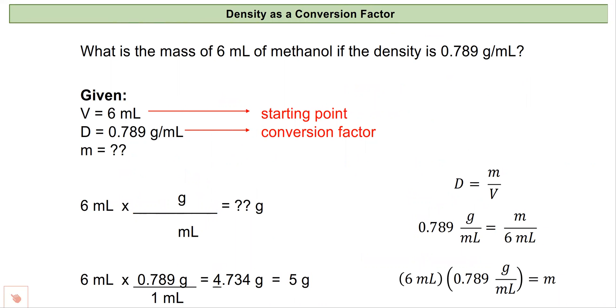Let's look at one of these. If we have six milliliters of methanol and we know its density is 0.789, let's find the mass. So the information given to me is volume and density, and I need to solve for mass. We can do this one of two ways: we can use the equation of density or we can use dimensional analysis.